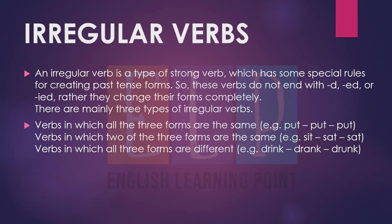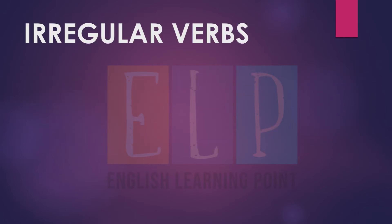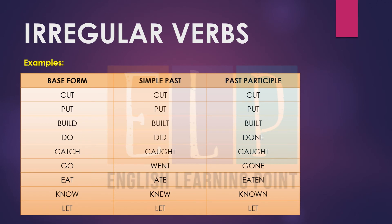Irregular forms are made like that — second and third forms are different. For example: cut, cut, cut; put, put, put; build, built, built; do, did, done; catch, caught, caught; go, went, gone; eat, ate, eaten; know, knew, known; let, let, let. These all are irregular verbs and we are not putting D, ED, or IED to change their forms — we are changing them completely.